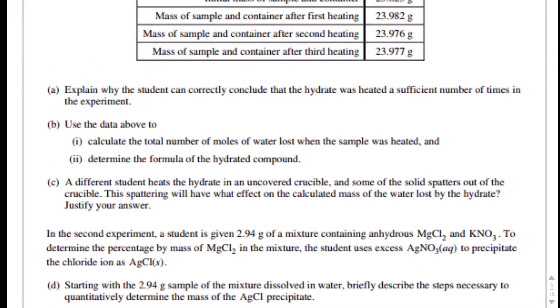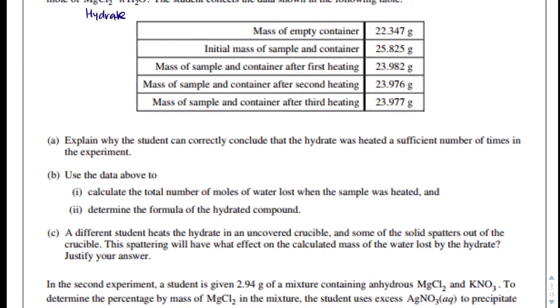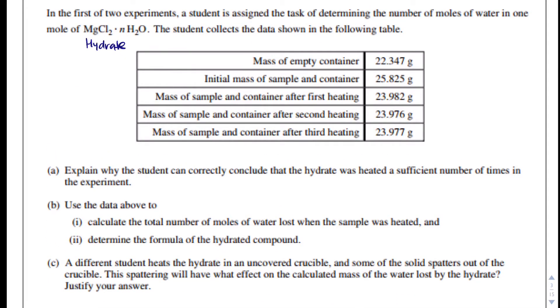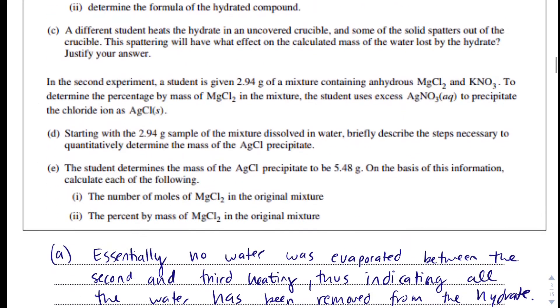In part B, it says, use the data in the table to calculate the total of moles of water lost when the sample was heated. I'm going to use just the last heating, it really wouldn't matter on the AP test if you used either of those two, but I'm going to use the last one, and then the first one before we even heat it, and that's those numbers. So, I'm going to do initial mass, and that one was 25.825 grams, and then, I spelled initial wrong.